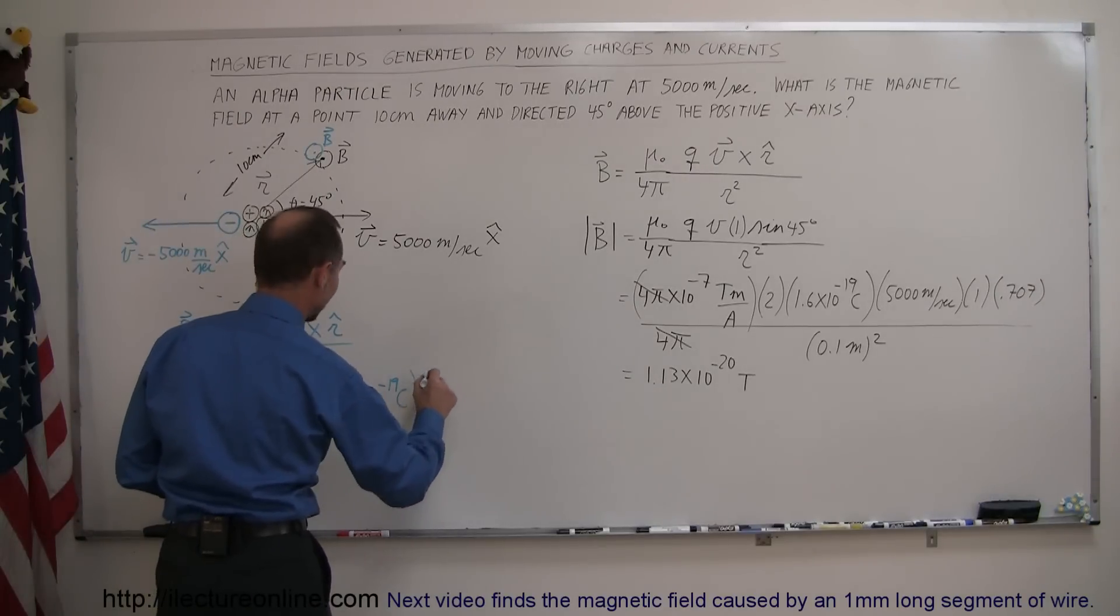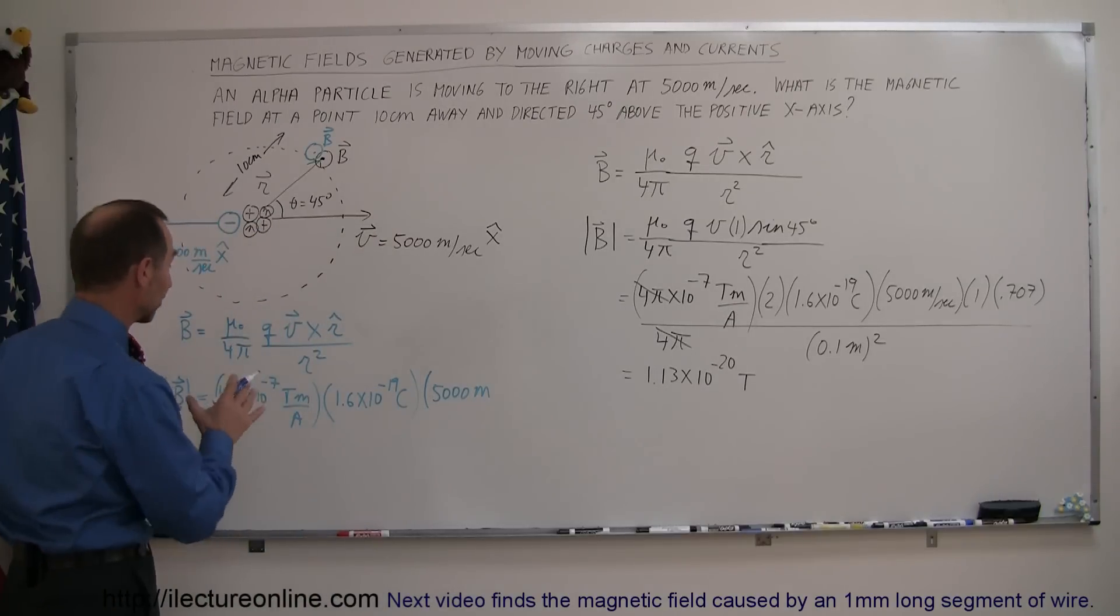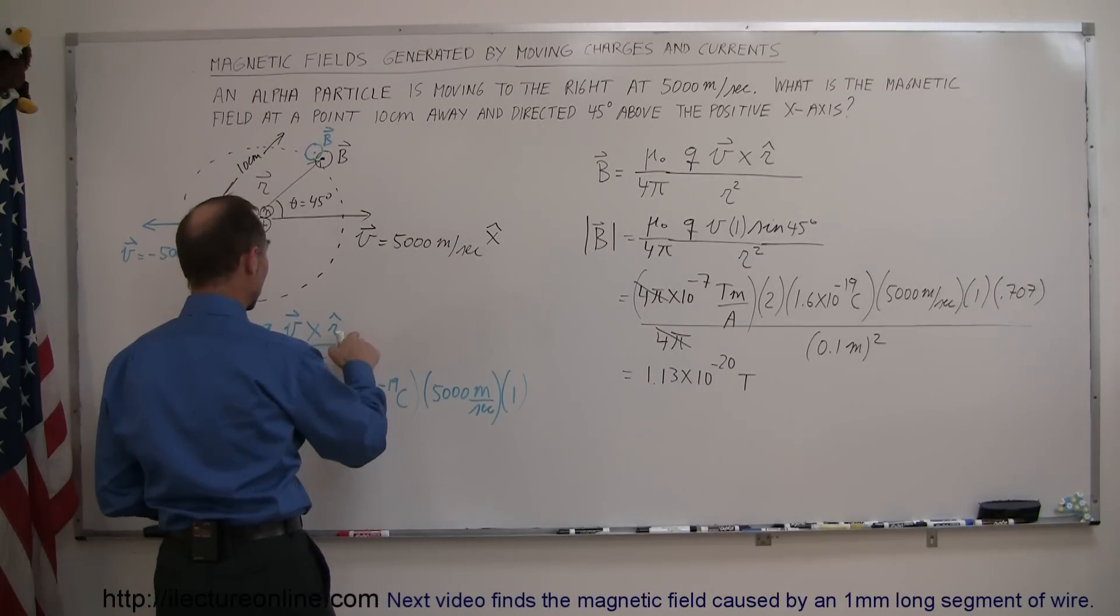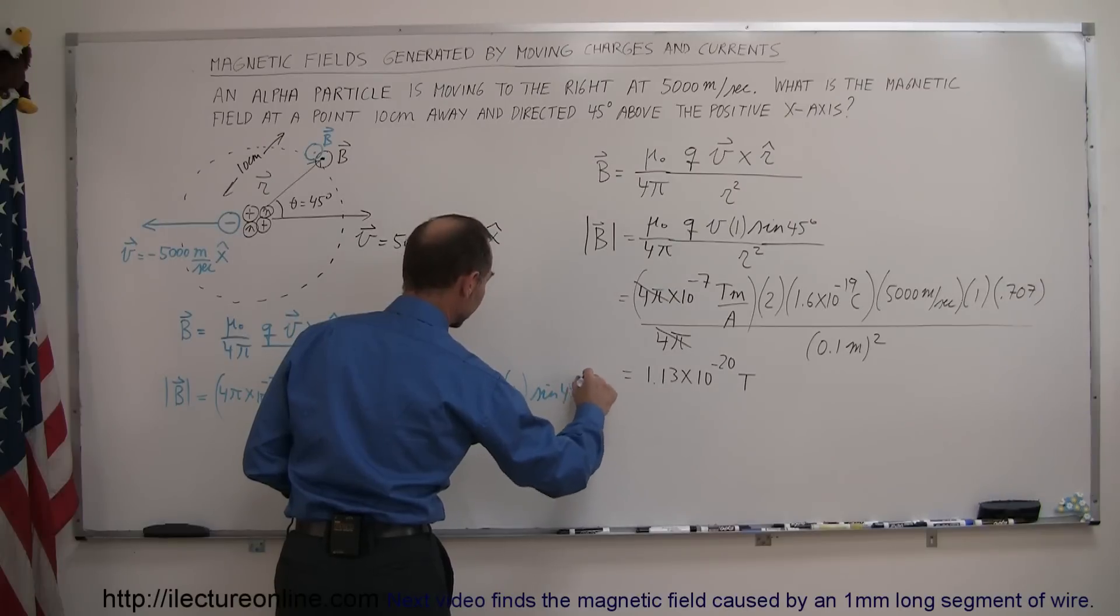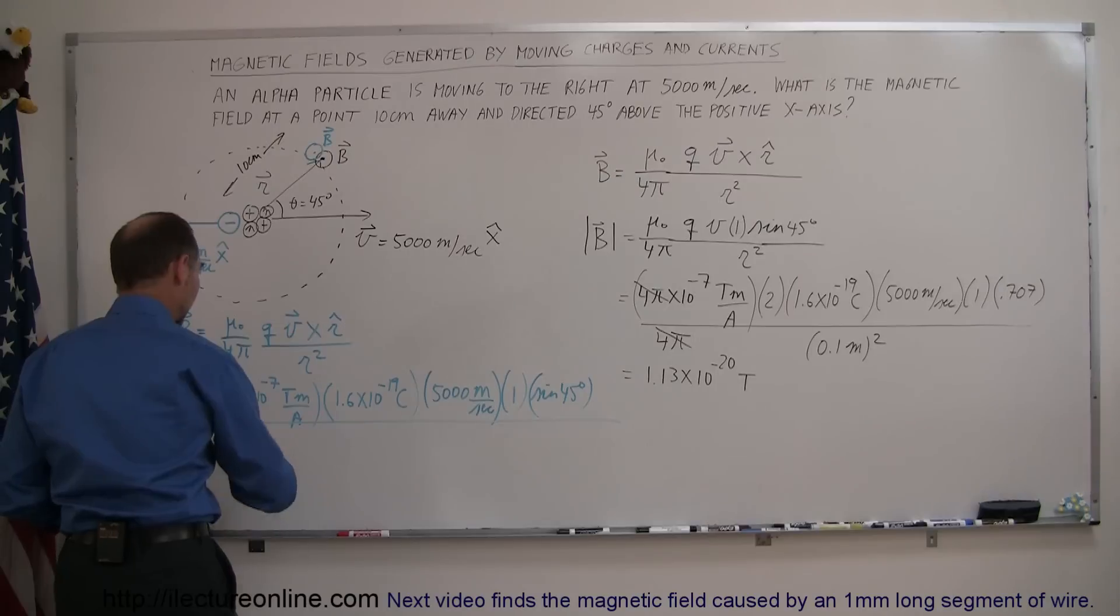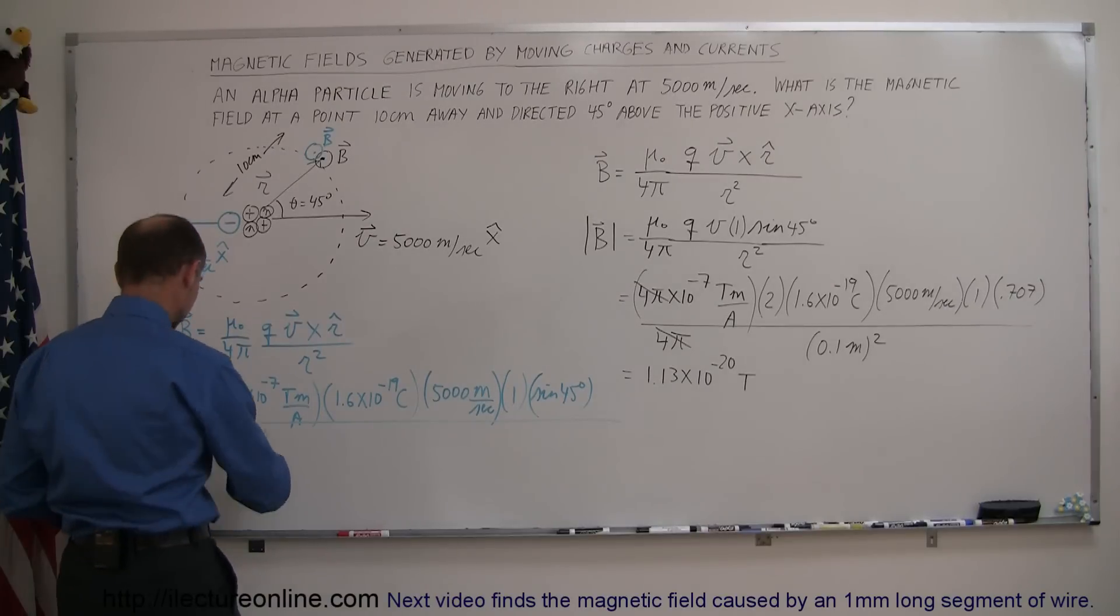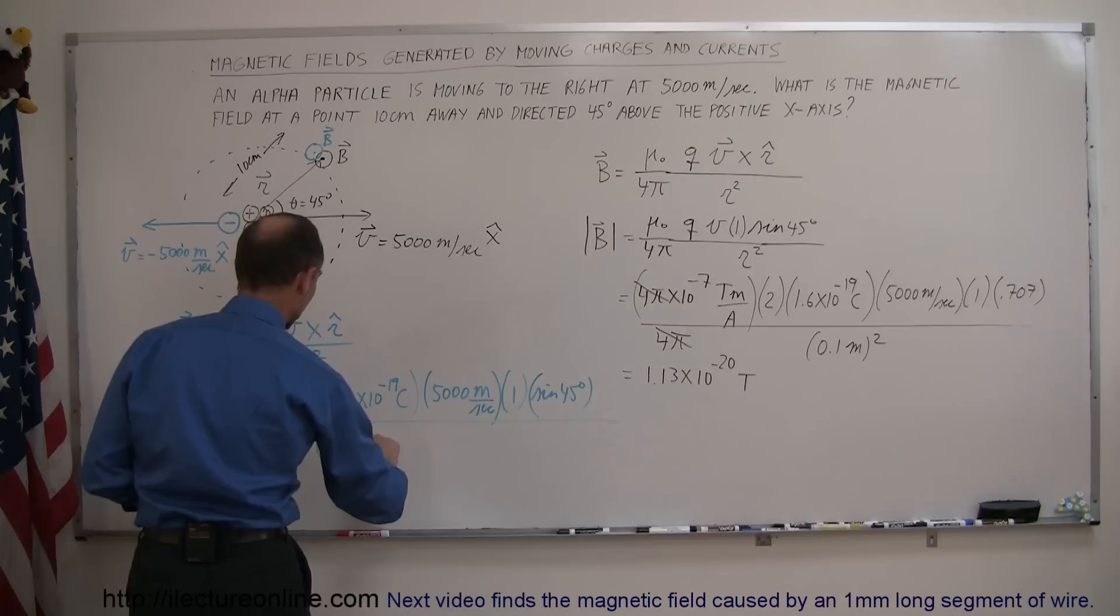The velocity here would be 5,000 meters per second, again we know that it's to the left, but we don't care about that because we're finding the magnitude, 5,000 meters per second, times the magnitude of the unit vector, and don't forget, then we have to multiply that times the sine of the angle, the sine of 45 degrees, and the whole thing divided by 4 pi, and the distance which still would be 10 centimeters or 0.1 meter quantity squared.